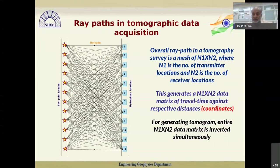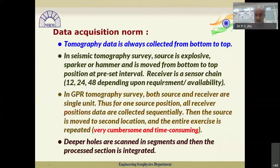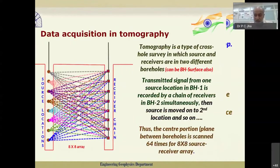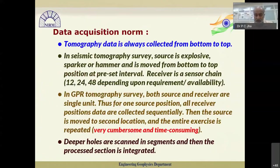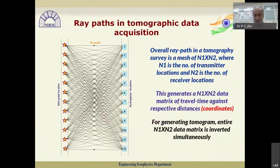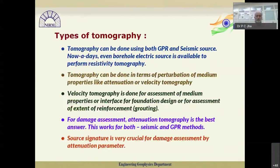To generate a tomogram, the entire n1×n2 data matrix is inverted simultaneously. This equation-solving is very complex and time-consuming. For a 12×12 station array, we have 144 travel time data points and this 144-element data matrix must be inverted simultaneously to generate the tomogram.